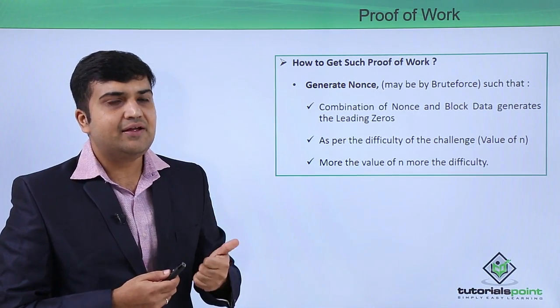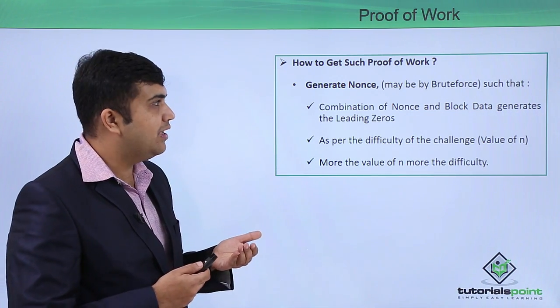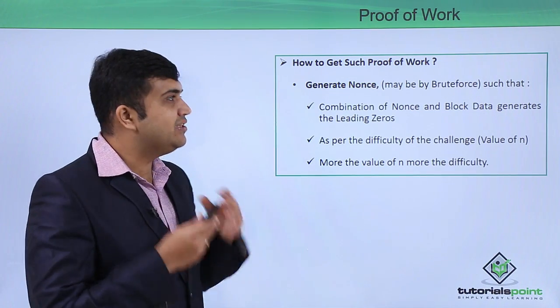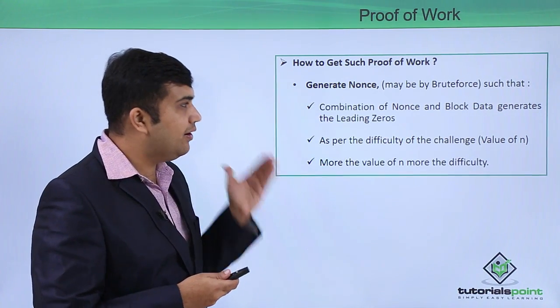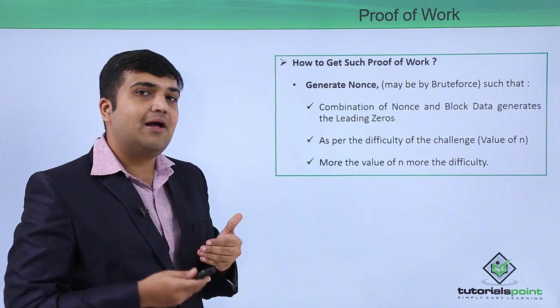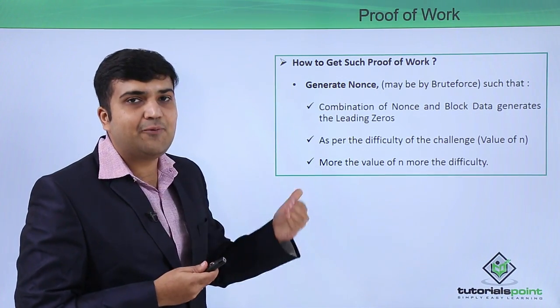Here we will be generating or finding a value of nonce, maybe by brute force starting from zero to some value, such that the combination of nonce and the block data, which has been generated including the hash value of the previous block, comes out with the required leading zeros.